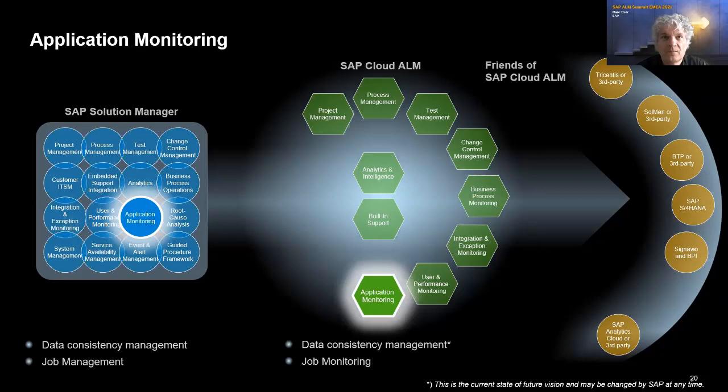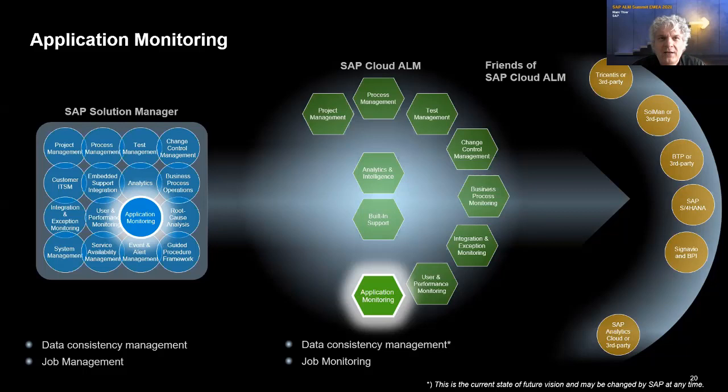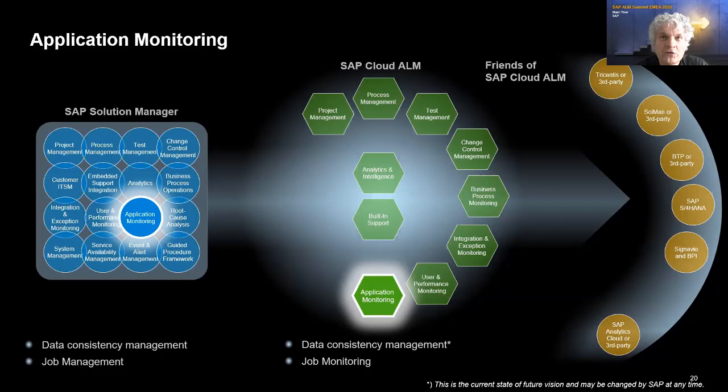Application monitoring combines data consistency management and job management. In Cloud ALM, our focus will be on job monitoring — pure monitoring of jobs, without scheduling and job documentation capabilities. Data consistency management is not yet available, but we are aiming to provide a similar capability for the products we support in Cloud ALM: all S/4 versions, plus BW and Business Suite.